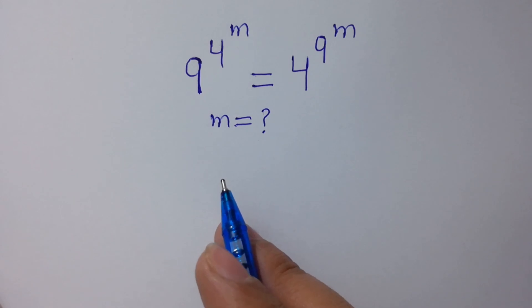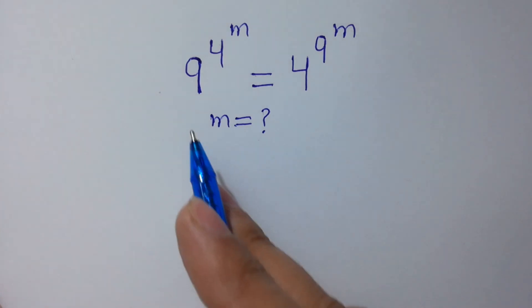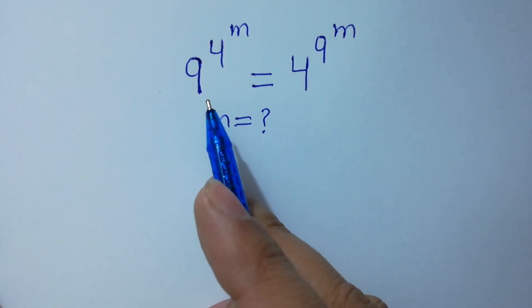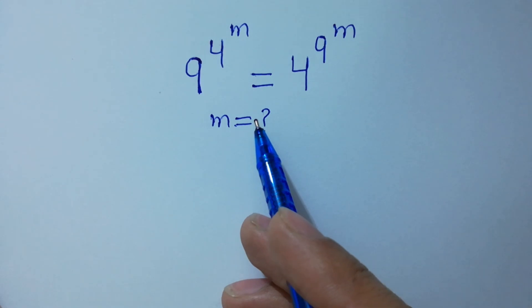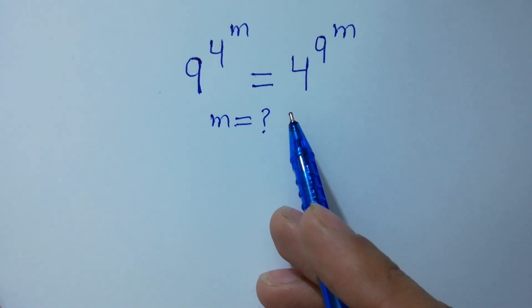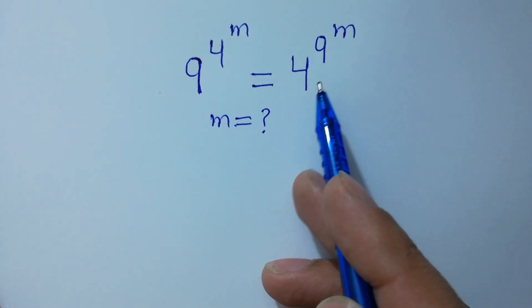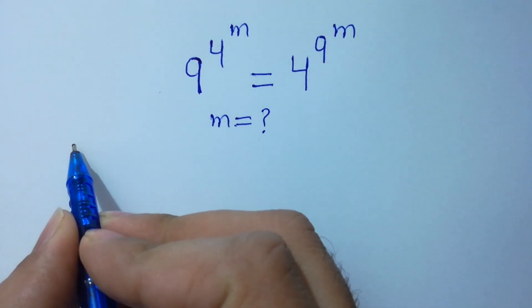Hello friends. Find the value of m if 9 to the power 4 to the power m equals 4 to the power 9 to the power m. Let's have a solution here.